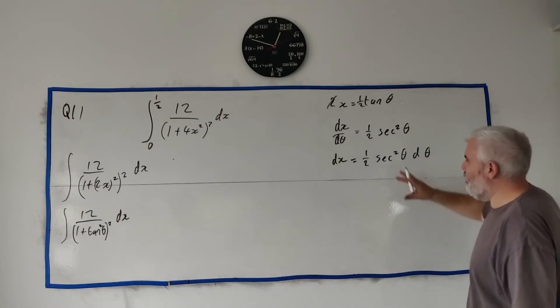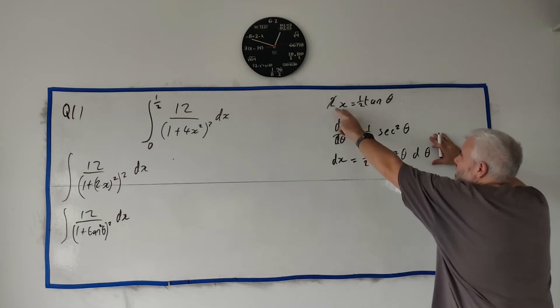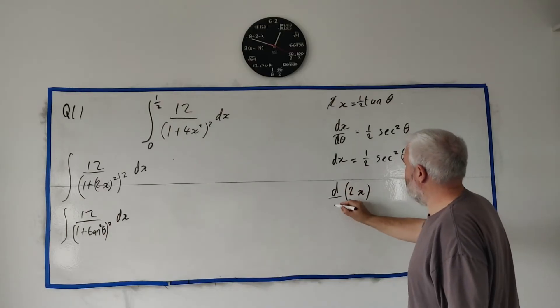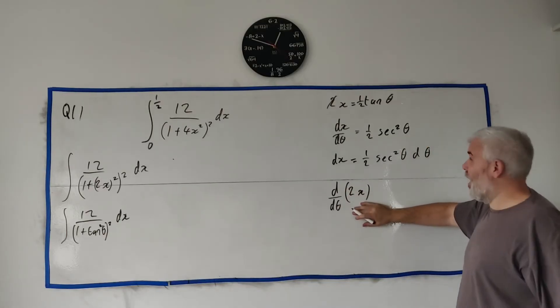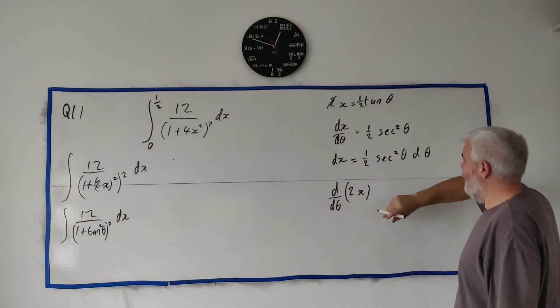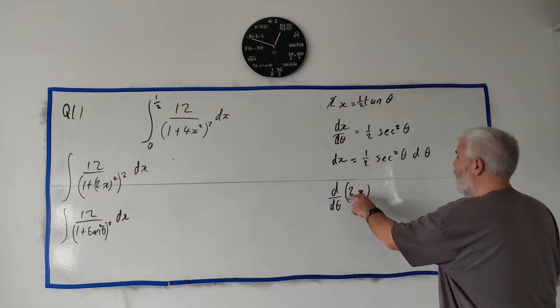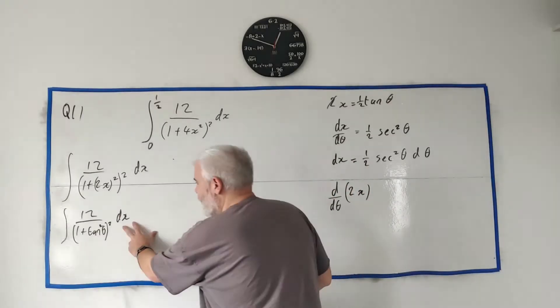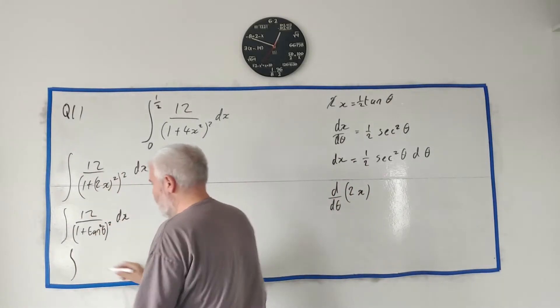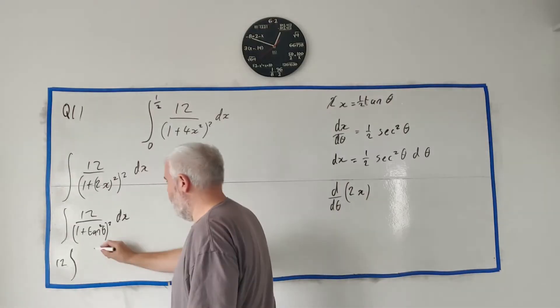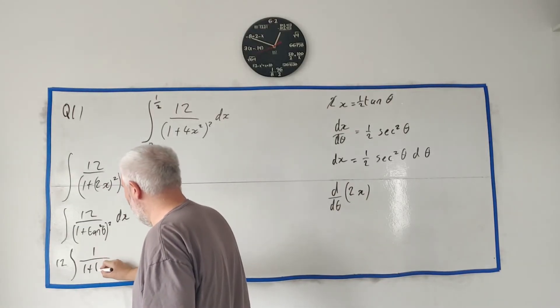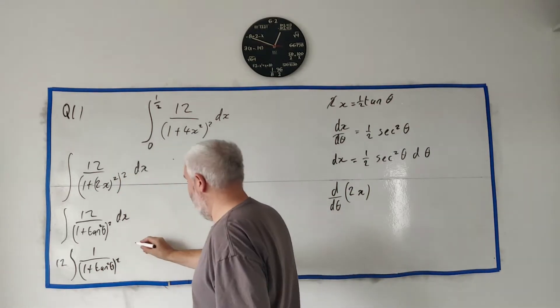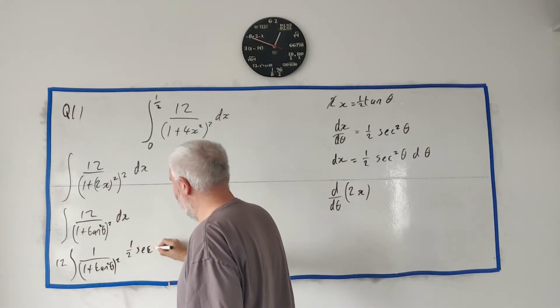Before I move on, the other way you could have done this is keep this line and differentiate both sides with respect to θ - you'd end up using the chain rule to get something similar. Let's rewrite this line: let's bring the 12 outside. We're left with 12 times 1 over (1 + tan² θ)². Instead of dx though we have ½ sec² θ dθ.